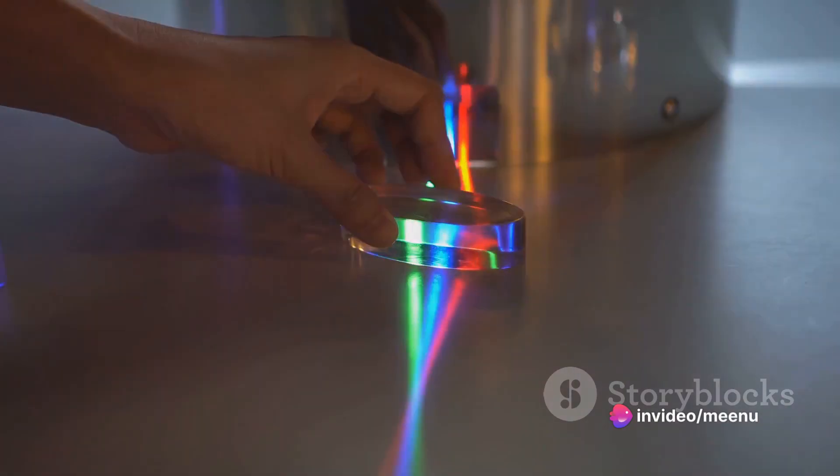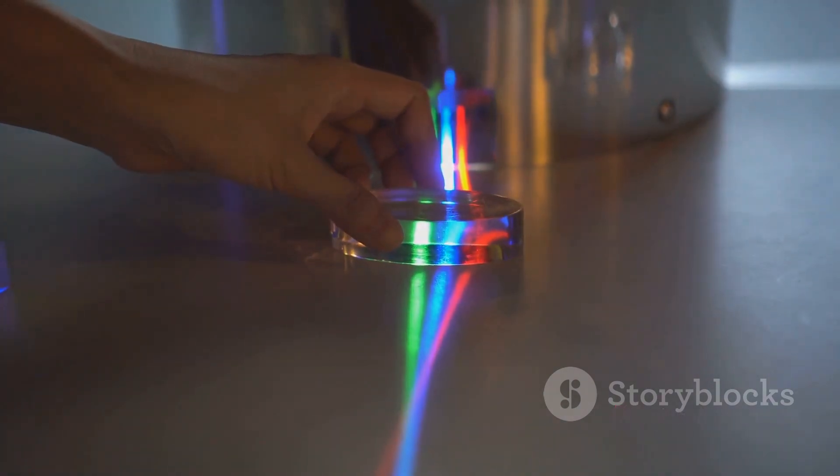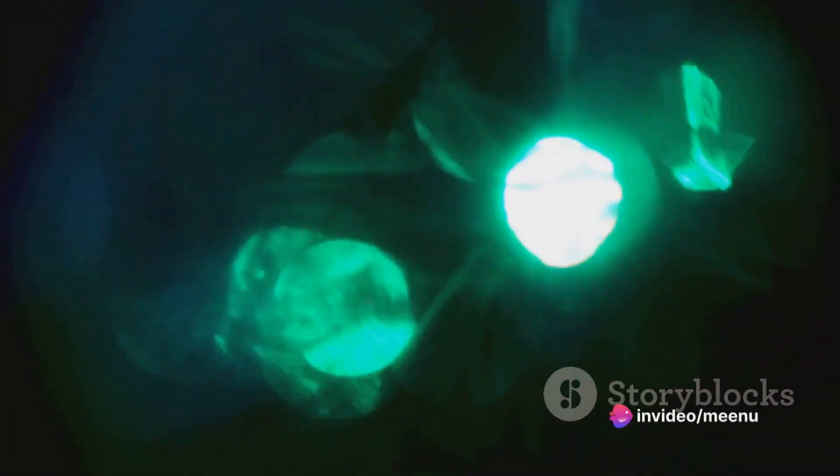By changing the angle, we can make the colors spread out even more. This happens because different colors bend at different angles when passing through the glass. Red light bends the least and violet light bends the most.